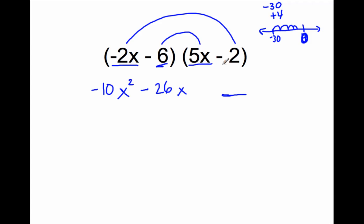Multiply the last terms. I have negative 6 times negative 2. Negative 2 times negative 6 is 6 times 12. 6 times 2 is 12. And the opposite of the opposite is positive. So positive 12. That should be my answer.